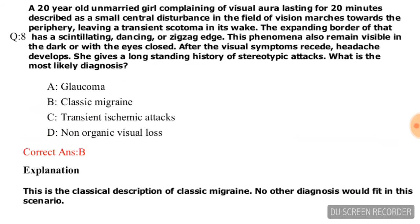Question number eight: A 20-year-old unmarried girl complains of visual aura lasting 20 minutes, described as a small central disturbance in the field of vision that marches towards the periphery leaving a transient scotoma. The expanding border has a scintillating, dancing, or zigzag edge, remaining visible in the dark or with eyes closed. After visual symptoms recede, headache develops. What is the most likely diagnosis? Options are glaucoma, classic migraine, TIA, non-organic visual loss. The correct answer is option B, classic migraine.